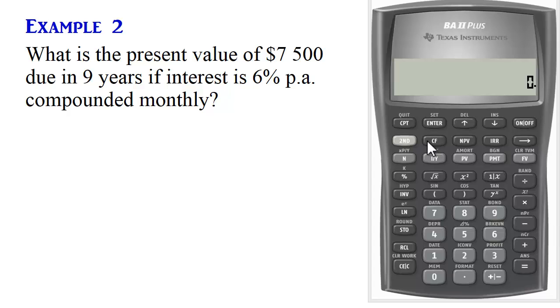So begin by setting P/Y. Second P/Y is compounded monthly. So we enter 12. Enter. Scroll down. You can see that C/Y is automatically set to 12 as well. Second Quit.